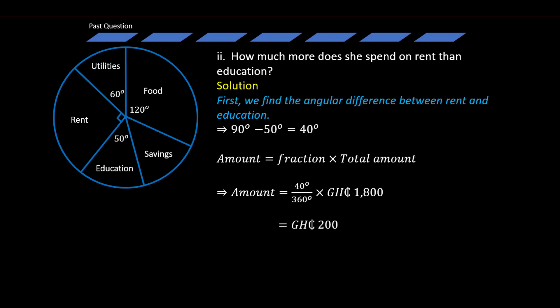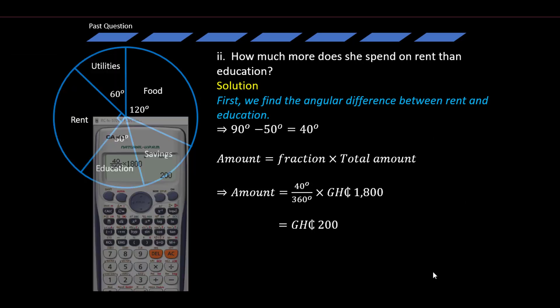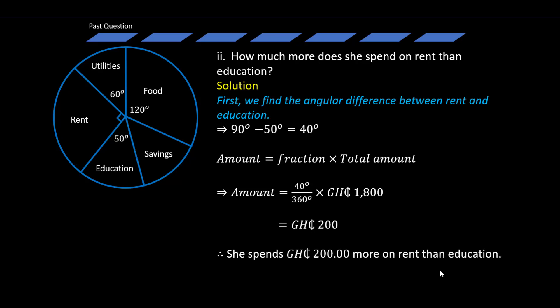That simplifies to 200 Ghana cedis. On the calculator, key in 40 over 360, use the arrow to move the cursor, then press the times key and enter 1,800, then press equals — it gives you 200 Ghana cedis. Therefore she spends 200 Ghana cedis more on rent than education.